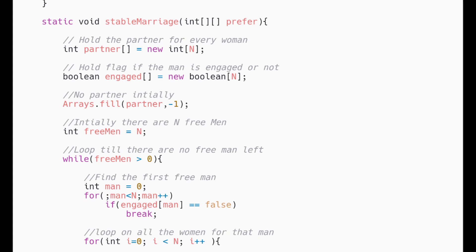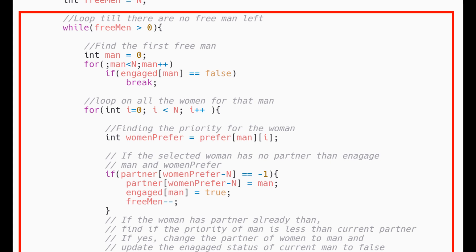Inside this method, we first define two array of size n. The first array, partner, holds the partner of the woman and the second array, engaged, holds the flag if the man is engaged or not. Then we take a variable, free men which will hold the number of men which are not engaged. We then loop till there are no free men left.